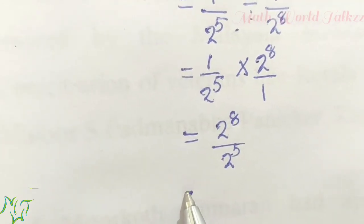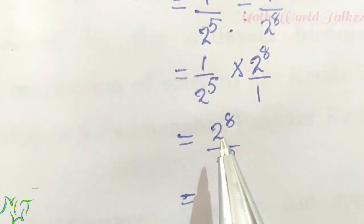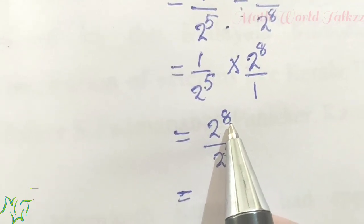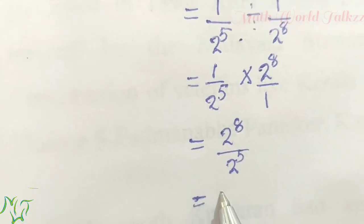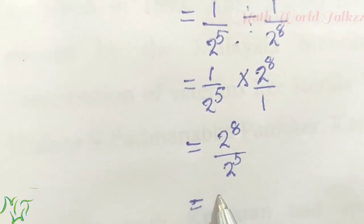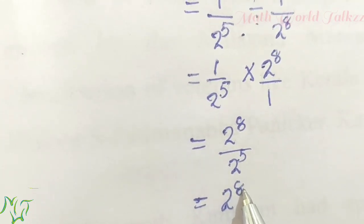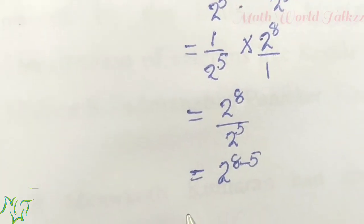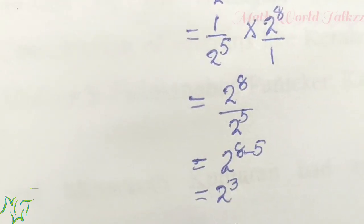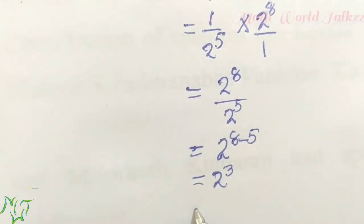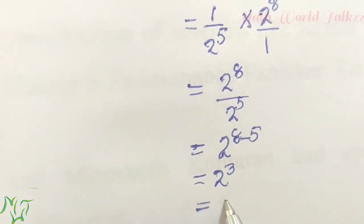Now we apply the division rule. The power is bigger in the numerator, so we use the first rule: 2 raised to 8 minus 5, which equals 2 raised to 3.